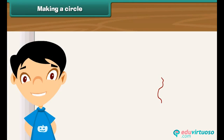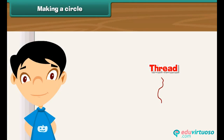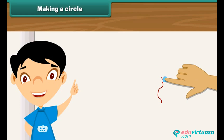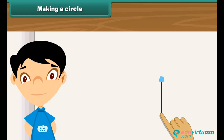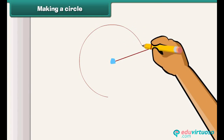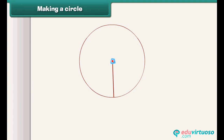Let us learn to draw a circle with the help of a thread. Take a piece of thread and paste one end of the thread on your notebook. Hold the thread by the other end and move it around the fixed end — a circle is formed. The fixed end of the thread is the center of the circle. The length of the thread from the center to the boundary of the circle is the radius of the circle.